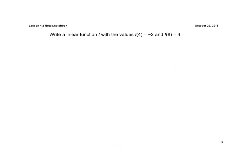So now it says write a linear function f with the values f of 4 equals a negative 2 and f of 8 equals 4. Now if you recall, when it's written as f of 4 equals a negative 2, this is my x value and this is my y value. So that's just the ordered pair 4, negative 2.